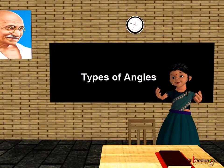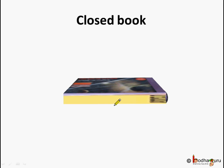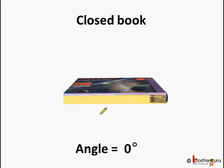Good morning children. Now we shall learn about different types of angles. Let's see the different angles with reference to a book. Here there is a story book and it is closed. The pages haven't been turned, so we can say the angle here is equal to 0 degrees between the two pages of the book.